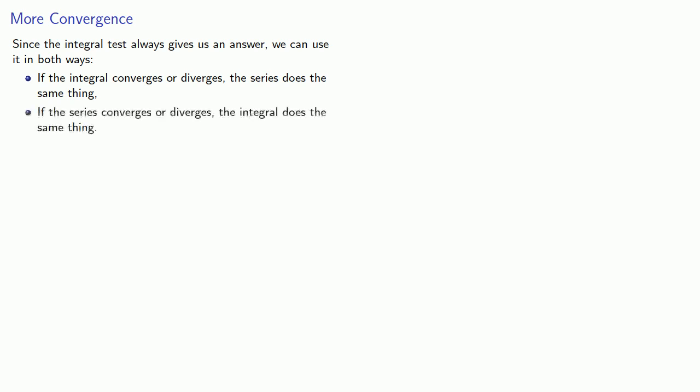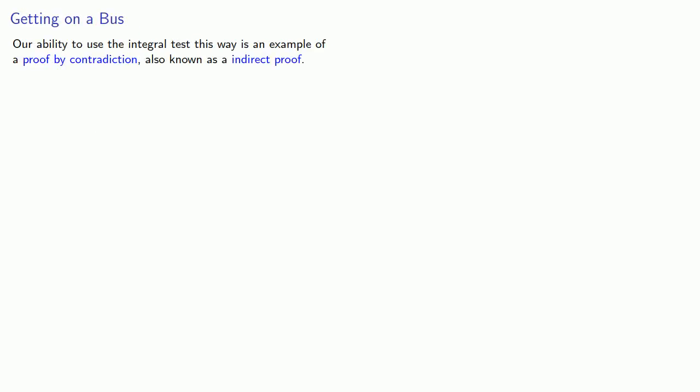But if the series converges or diverges, the integral does the same thing. And just to dot all the i's and cross all the t's, our ability to use the integral test this way is an example of a proof by contradiction, also known as an indirect proof.